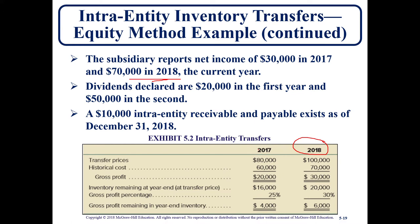In 2017, the year prior, we had a deferred gross profit, so a consolidation entry would have taken place in the 2017 consolidated financial statements. In year two, this $4,000 will have to be recognized — that's entry star G. For the current year, we have a sale of $100,000 that we'll need to reverse — that's entry TI, transfer of inventory — and we'll also have another entry related to the deferred gross profit for the current year.